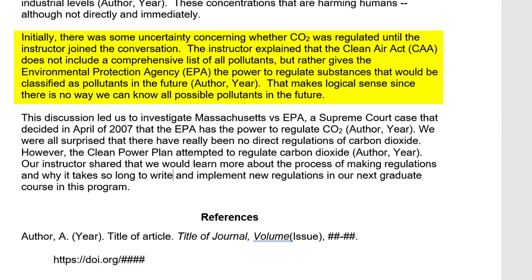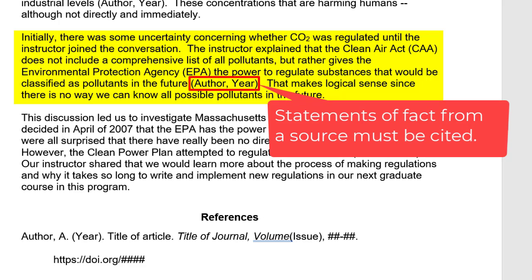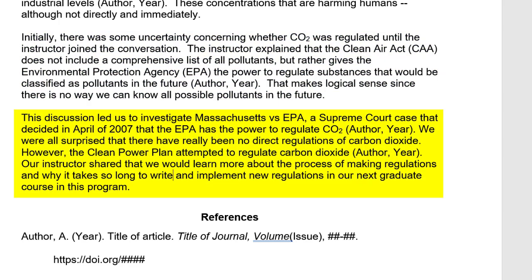That makes logical sense since there's no way we can know all possible pollutants in the future. As always, material statements of fact must be cited. This discussion led us to investigate Massachusetts v. EPA, a Supreme Court case that decided in April 2007 that the EPA has the power to regulate CO2 [citation, author, year]. We were all surprised that there have really been no direct regulations of CO2.